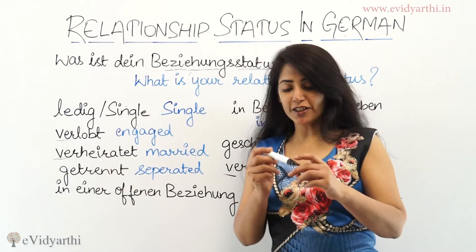The German word for relationship status is Beziehungsstatus. Beziehung is relationship, Status is status — so relationship status. Was ist dein Beziehungsstatus? means what is your relationship status?